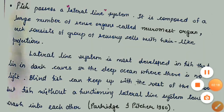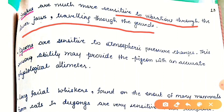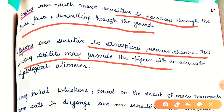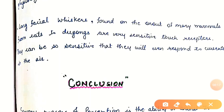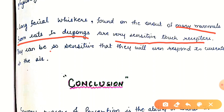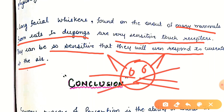Snakes are much more sensitive to vibrations through the lower jaw traveling through the ground. Pigeons are sensitive to atmospheric pressure changes — this sensory ability may provide the pigeon with an accurate physiological altimeter. Long facial whiskers found on the snout of many mammals from cats to dugongs are very sensitive touch receptors — they can be so sensitive that they will even respond to the currents in the air. These moustache-like structures are known as whiskers.